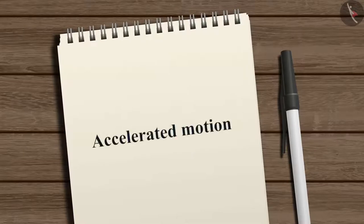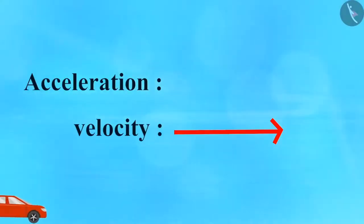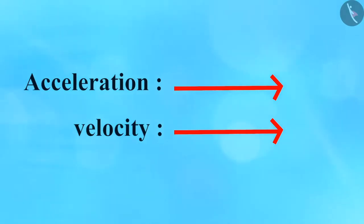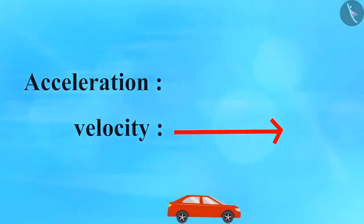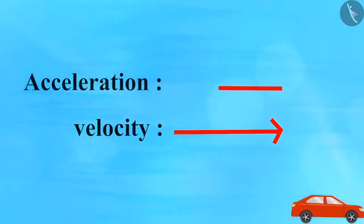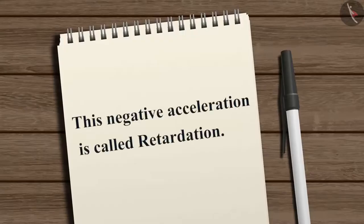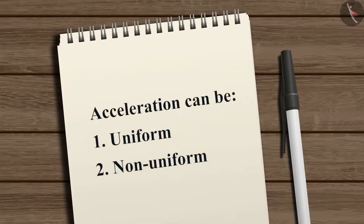This kind of motion is known as accelerated motion. Acceleration is taken to be positive if it is in the direction of velocity, and negative when it is opposite to the direction of velocity. This negative acceleration is called retardation. Acceleration can either be uniform or non-uniform.